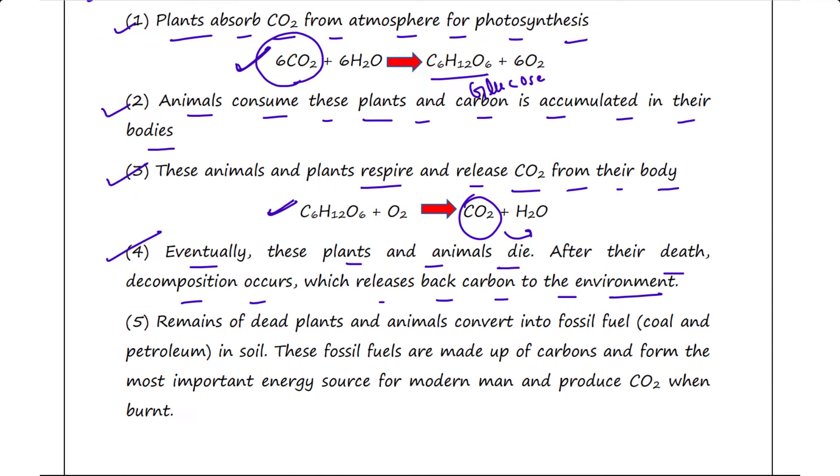Step five: remains of dead plants and animals convert into fossil fuels. Coal and petroleum are fossil fuels generated in the soil after conversion of the remaining parts of dead animals and plants. These fossil fuels are made up of hydrocarbons and form the most important energy source for modern man. They produce CO2 when burnt.